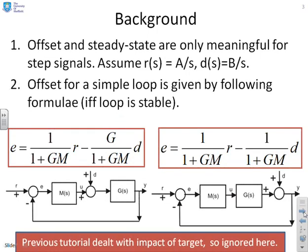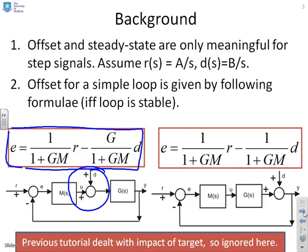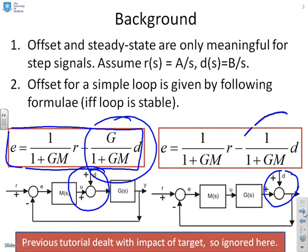A bit of background. Two types of disturbance signal are going to be considered here: disturbance signals which affect the system input, and the sort of transfer functions you get are given here. The most important thing to note is the impact on the output error of the disturbance. Similarly, if you had a disturbance coming straight onto the output, the impact of that disturbance on the output error is given by this term here.